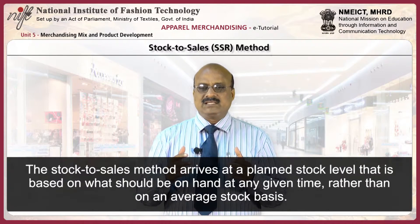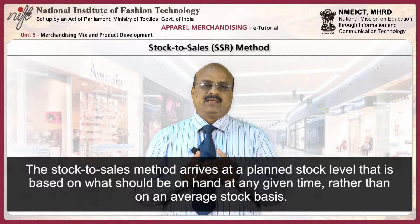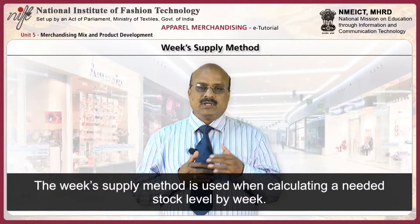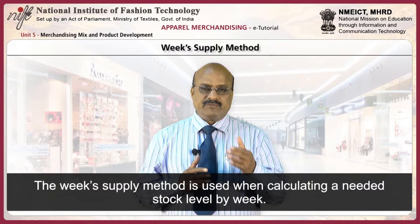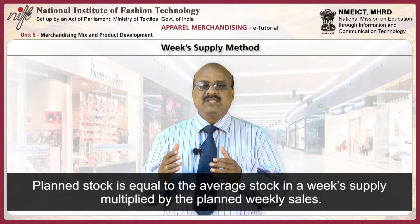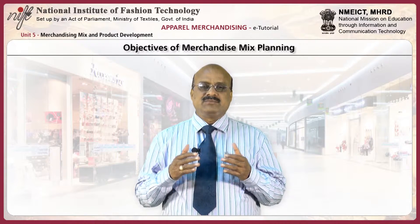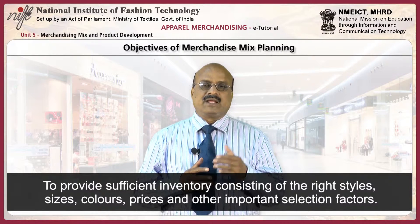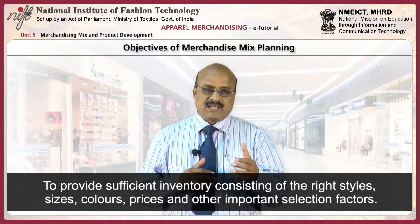The stock to sales method arrives at a planned stock level that is based on what should be on hand at any given time rather than on an average stock basis. The weekly supply method is used when calculating a needed stock level by week. Planned stock is equal to the average stock in a week's supply multiplied by the planned weekly sales. The main objectives of merchandise mix planning are to provide sufficient inventory consisting of right styles, sizes, colors, prices and other important selection factors.